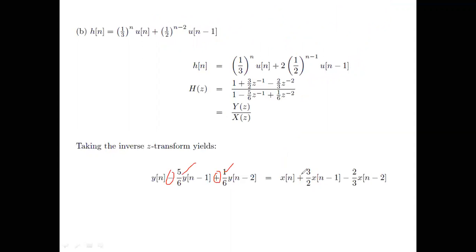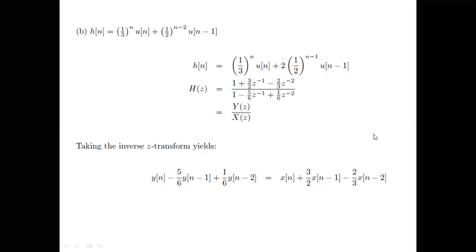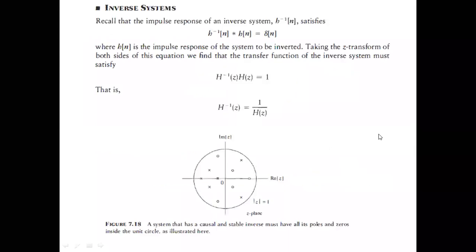The difference equation lets you know the exact circuit and do budgeting — how many pieces of equipment are needed — and also lets you optimize. So going from the impulse response to the difference equation is essentially going from the mathematical description to the implementation details.